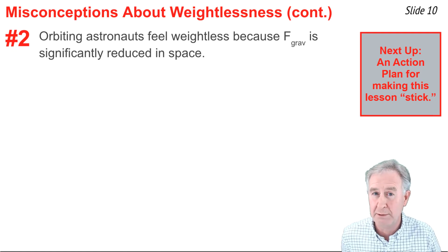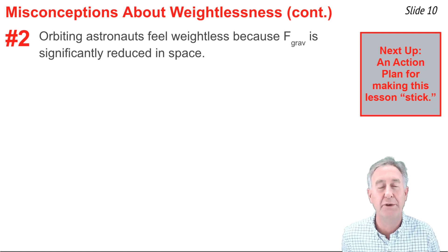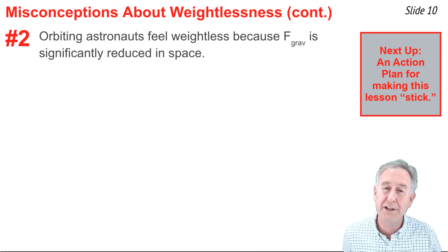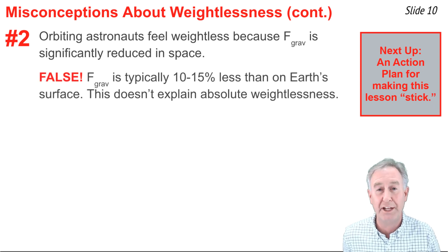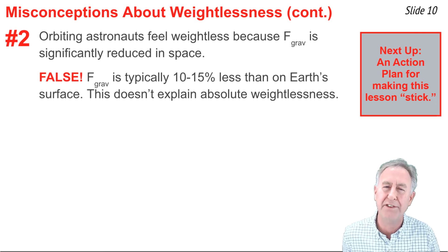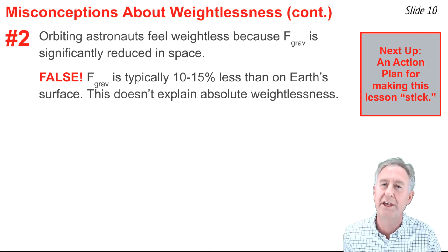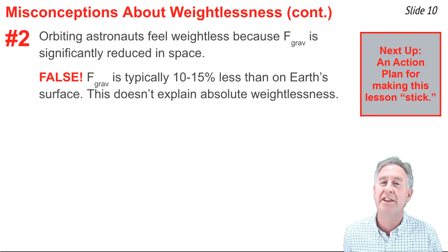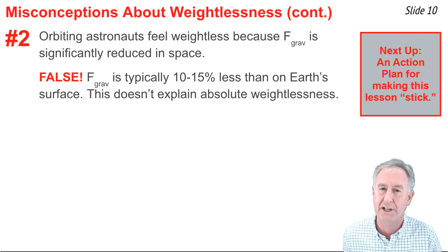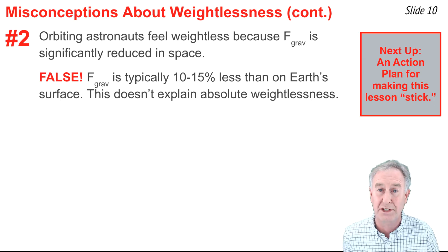The second misconception is that orbiting astronauts on the space station feel weightless because gravity is significantly reduced in space. This, too, is false. Now, to be certain, the force of gravity on an astronaut on the space station is about 10 to 15 percent less than what it is on Earth's surface. But this does not explain the absolute weightlessness that is sensed when the astronaut senses that they have zero weight.